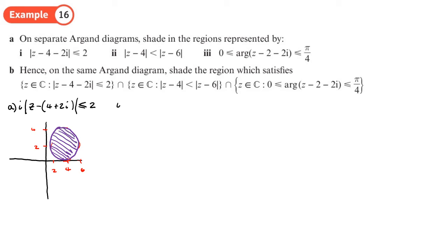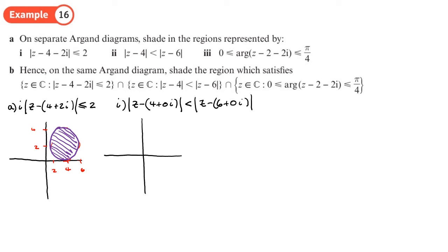The second one: in correct format, |z - (4 + 0i)| less than |z - (6 + 0i)|. We have our two points at 4 and 6. The locus is the perpendicular bisector. Because of the strict less-than symbol, the boundary is a dotted line going through 5, and we shade the side the inequality is pointing to — the side with 4 on it — so we shade to the left.